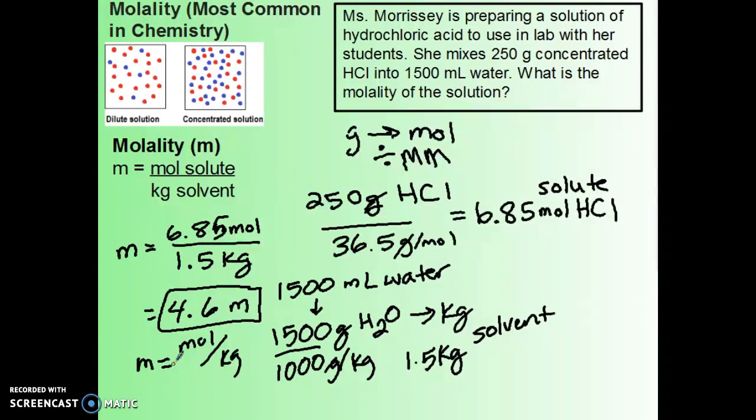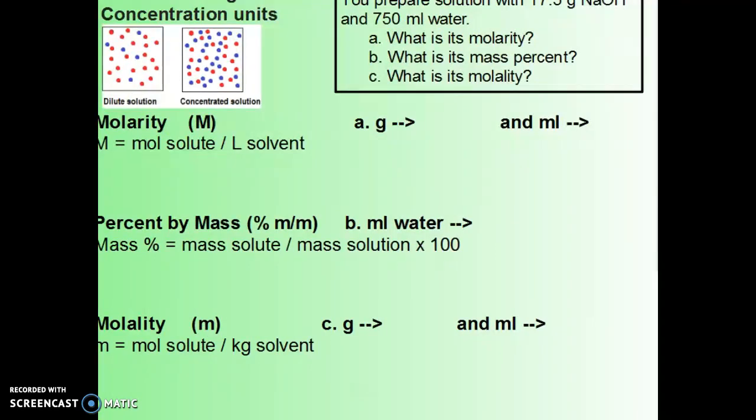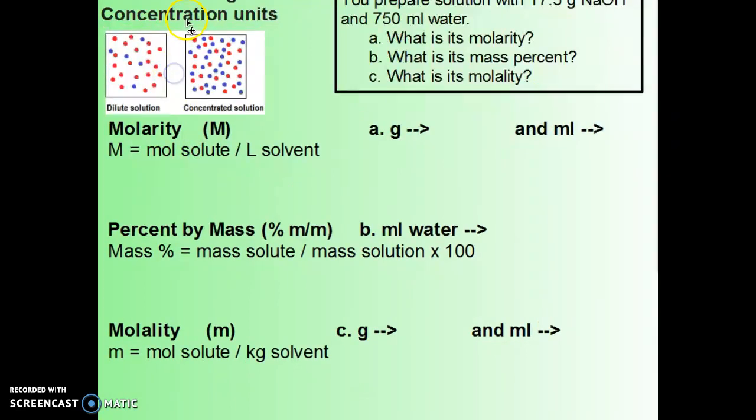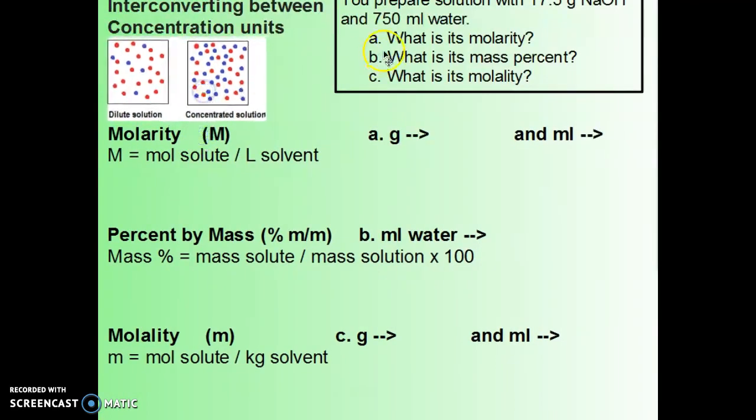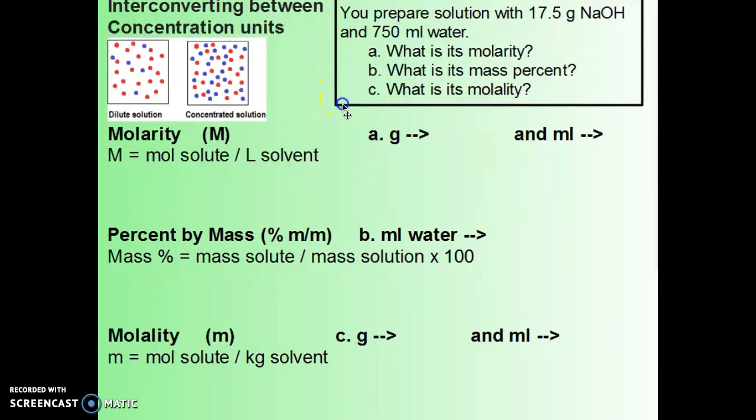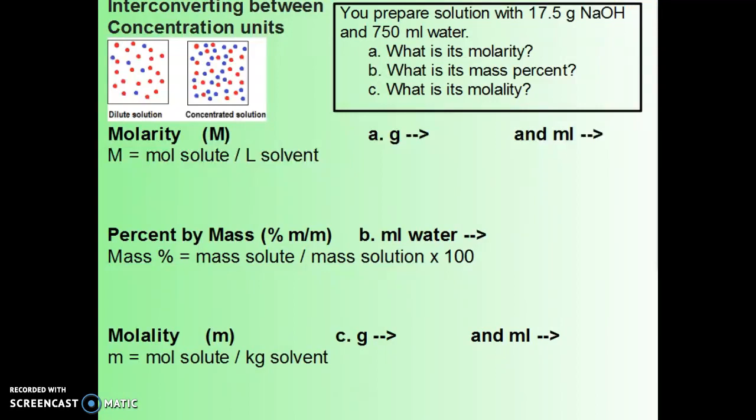Now, we can also convert between different concentration units. You might see some questions like this in class, which can seem a little bit cumbersome because it's a lot of converting, but as long as we understand how to do the individual conversions between different units, we should be fine. If we want to make a solution that has 17.5 grams of NaOH in 750 milliliters of water, we can calculate all three of these types of concentrations: molarity, mass percent, and molality.